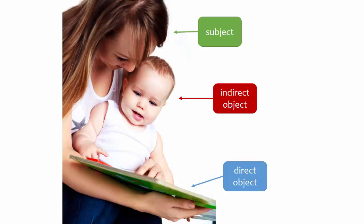If the subject is the person or thing doing the action, and the direct object is the person or thing the subject does the action to, the indirect object is the recipient or beneficiary of that action. Here, the action is reading. The subject is the mother because she's the one carrying out that action. The direct object is the thing she's reading — a book. The baby is the beneficiary of that action, so in grammatical terms, the word baby becomes the indirect object.